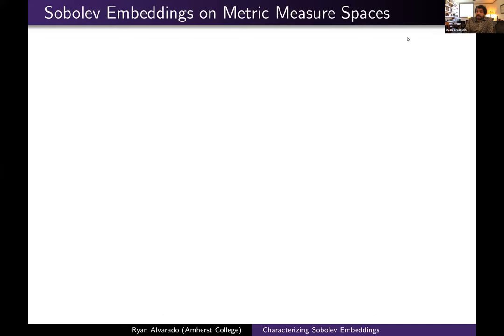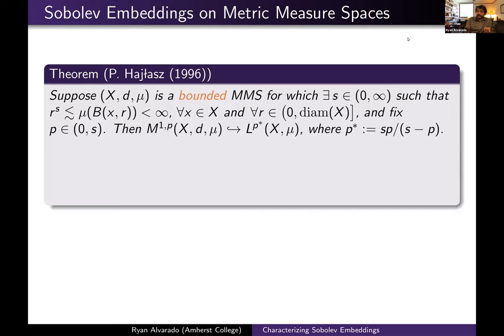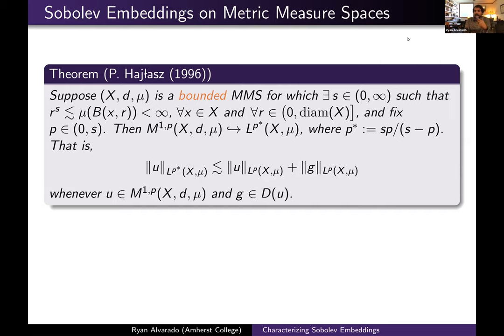M^{1,p} spaces also satisfy embedding theorems. In 1996, Hajłasz proved: if you have a bounded metric measure space, and for some positive exponent S the measure satisfies the lower inequality, then for any p strictly less than S, M^{1,p} on all of X embeds into L^{p*} of X, where p* equals Sp divided by S minus p. Here S appearing in the lower measure bound replaces the role of dimension in the Euclidean setting.